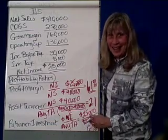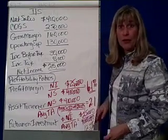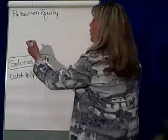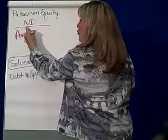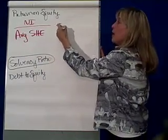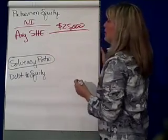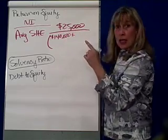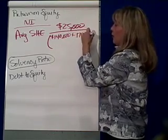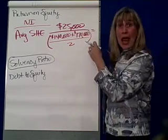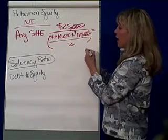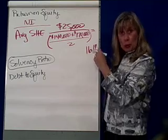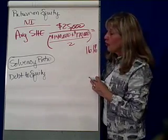Is that good or bad? Again, put it in context. But getting about a 12% return is a whole lot better than what you get on your checking account. The next ratio is return on equity. Return on equity is net income divided by average stockholders' equity. Net income is $25,000. Stockholders' equity at the beginning of the year was $140,000 and at the end of the year was $170,000. Taking those two and dividing by two gives our average stockholders' equity. That gives us a return on equity of 16.1%. Again, put it in context.